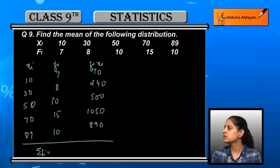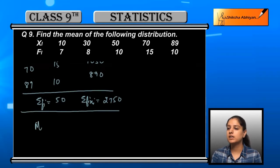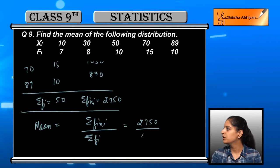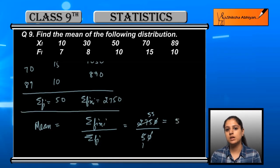The mean formula is Σ(F_i × X_i) divided by ΣF_i, which gives us 2750 divided by 50, which equals 55. So the mean of this distribution is 55.